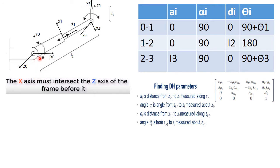Similarly, we can find the X axes. X zero is our freedom to choose, and Y zero can be chosen based on the right-hand rule. For X one, we put our thumb along Z zero and our index finger along Z one, and from the right-hand rule we find X one in this direction. Similarly, we can find X two and X three as well.